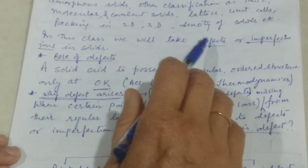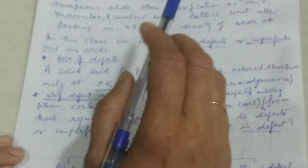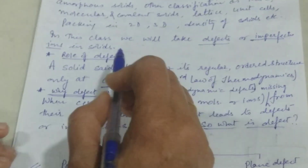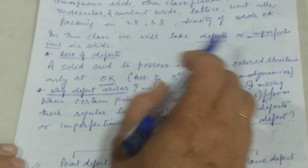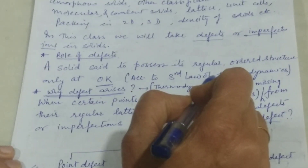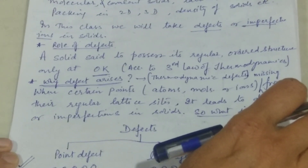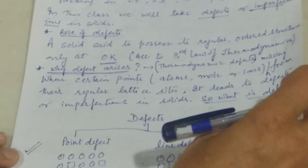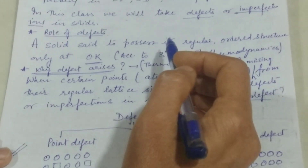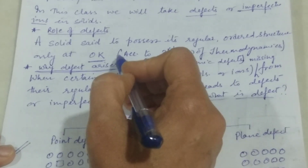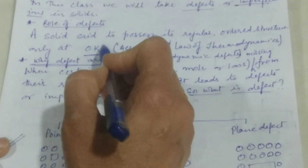Today in this class we will be talking about the defects or imperfections in solids. Each solid has some defects in it. Now, what is the meaning of defect? According to the third law of thermodynamics, a solid is said to possess zero entropy at zero Kelvin. A crystalline solid possesses zero entropy at zero Kelvin.